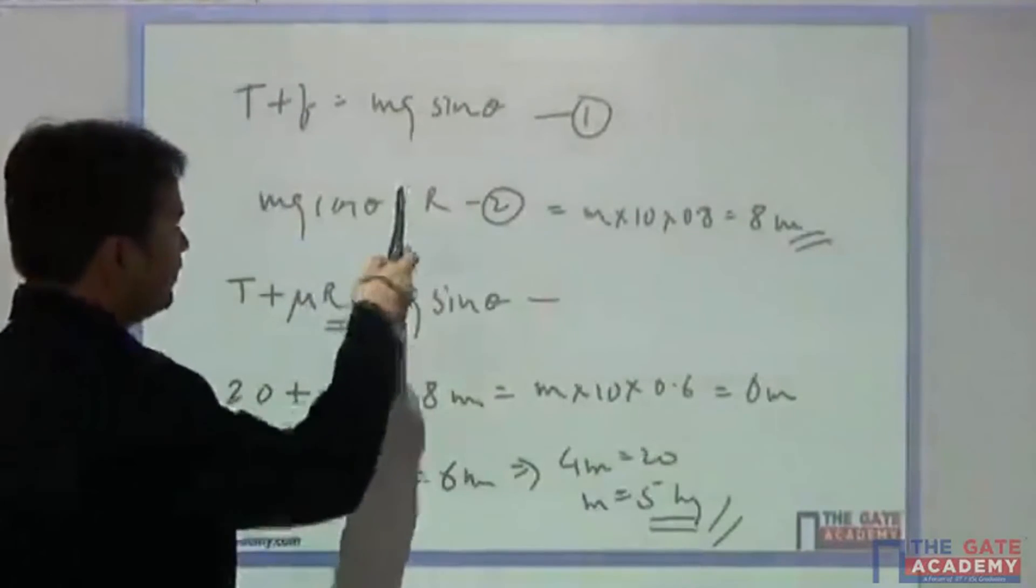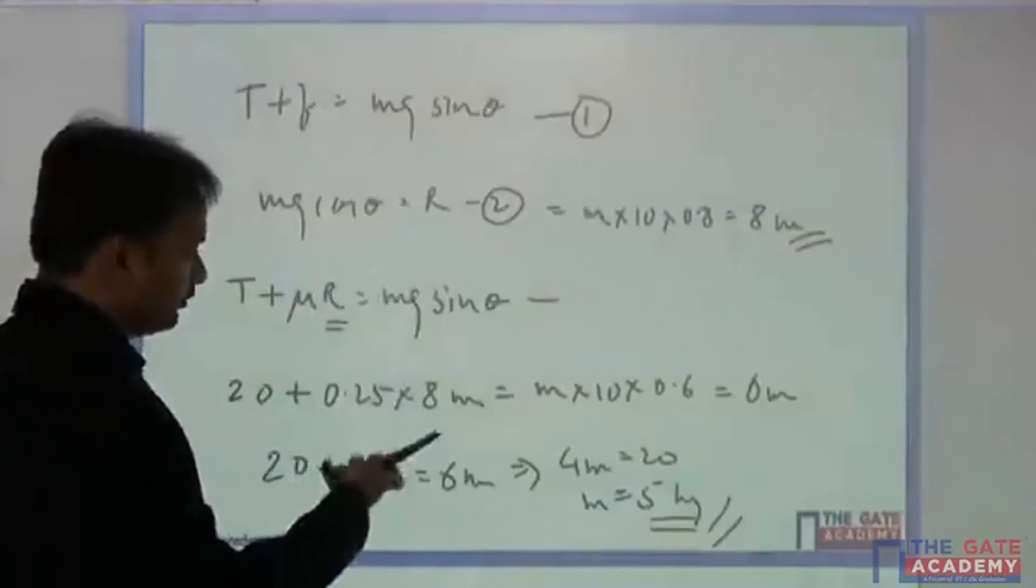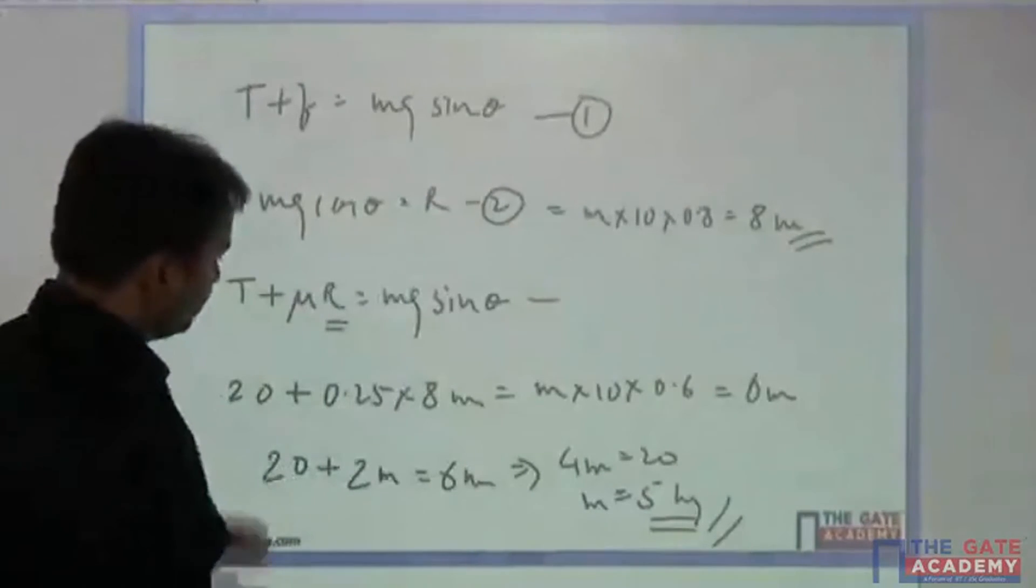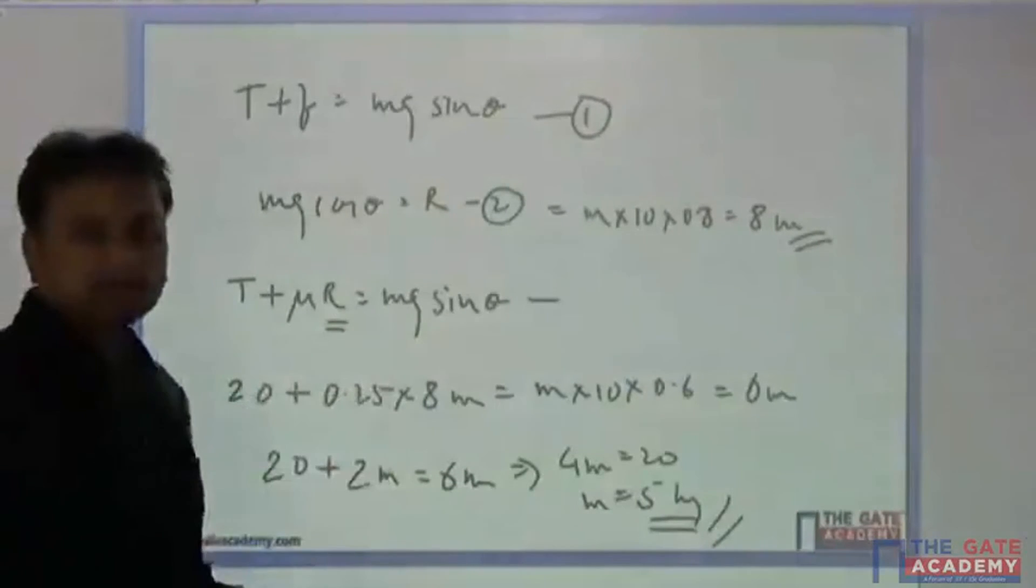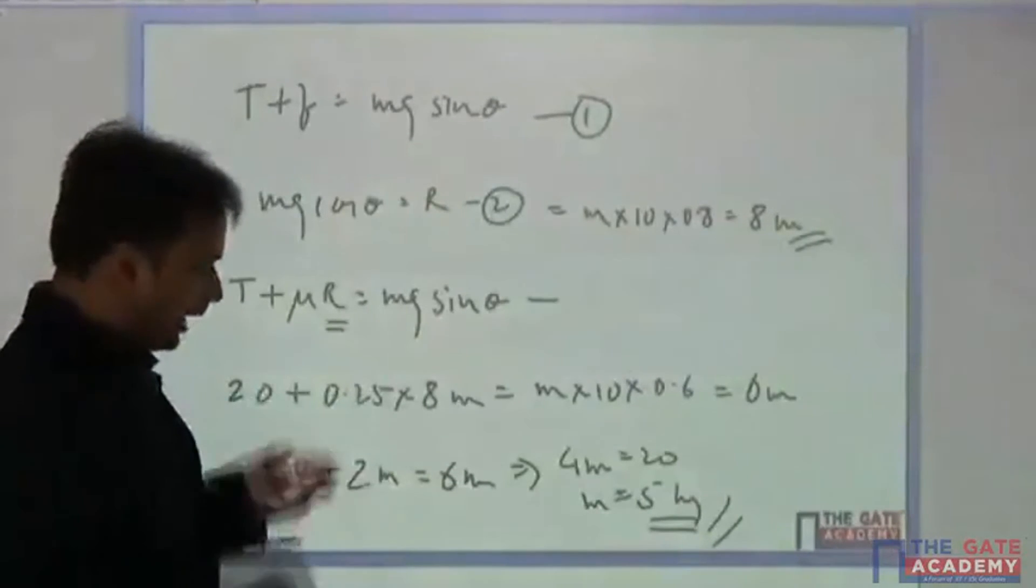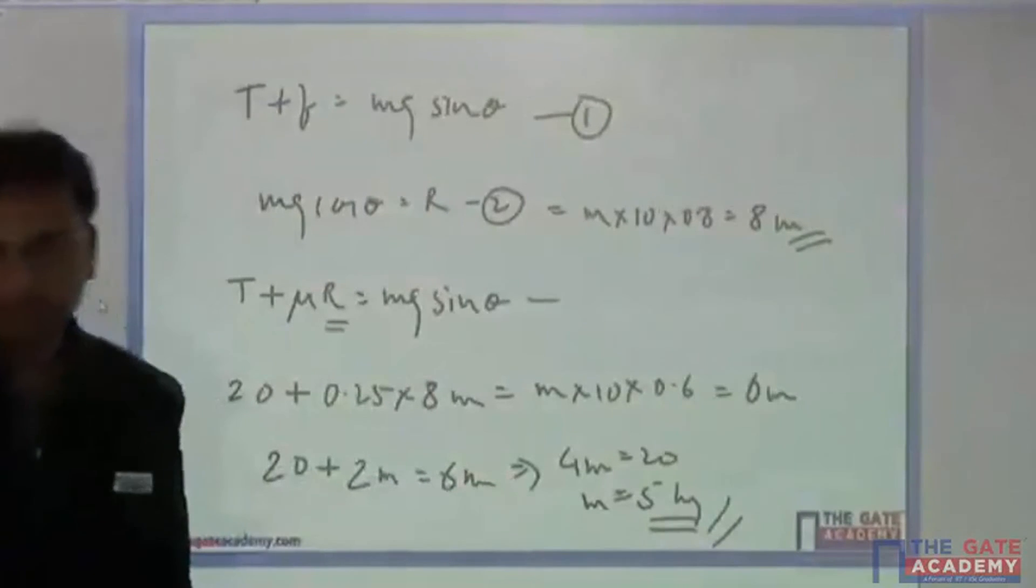And we have got two equations and one unknown. So we can easily find it out and we have to determine the mass of the block m. When you solve them you will get m equals 5 kg.